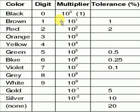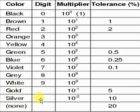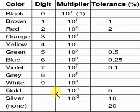For tolerance, just memorize 5, 10, 20 in case of gold, silver, and none, and 1 and 2 for brown and red. For gold and silver the multiplier exponents are negative: -1 and -2 respectively. The only special things to memorize are for gold, silver, and none — their multipliers and tolerances. Everything else is simple counting.